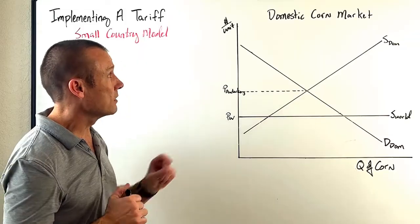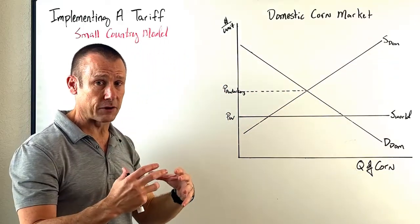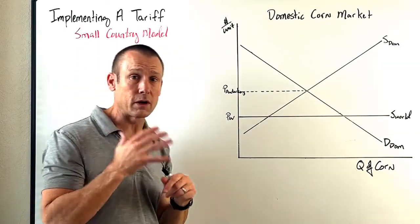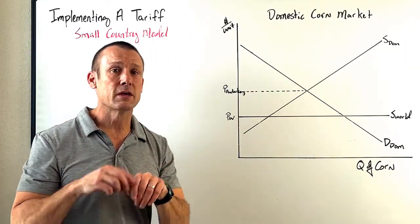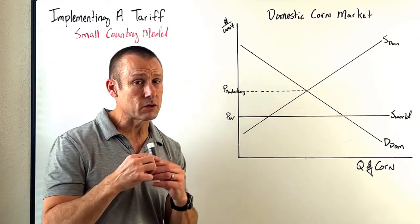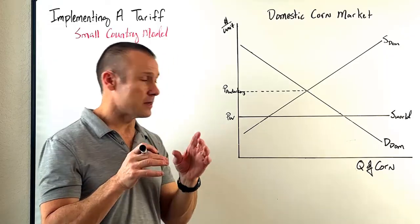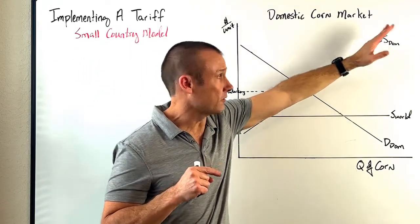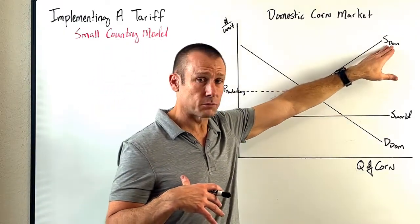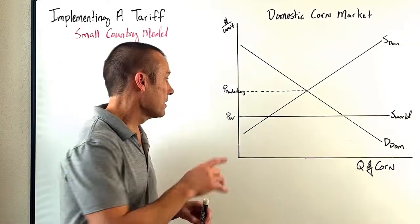The first thing to point out is that we're looking at a single country's market — it says domestic corn market. This is not the world market. This is the small country model: we're assuming this country is just a small, almost insignificant part of world trade. They're importing goods, but they are a very small part of world trade. The supply curve shown is supply domestic — only domestic producers are included, no world suppliers. The demand curve is demand domestic.